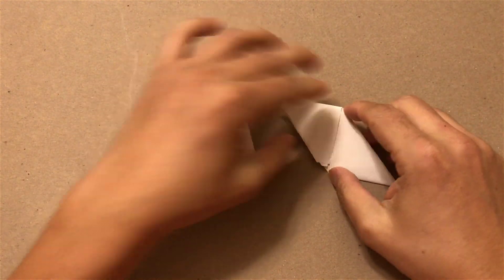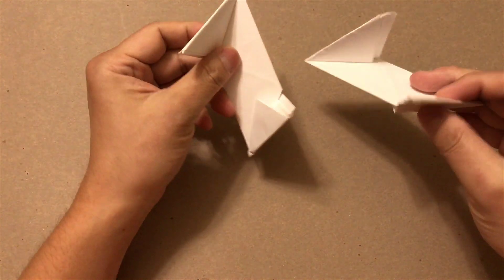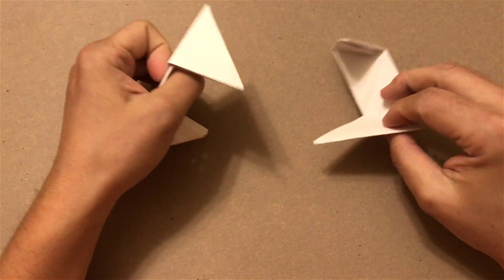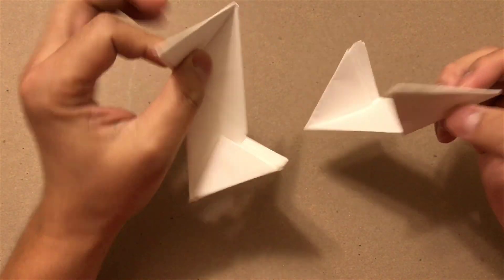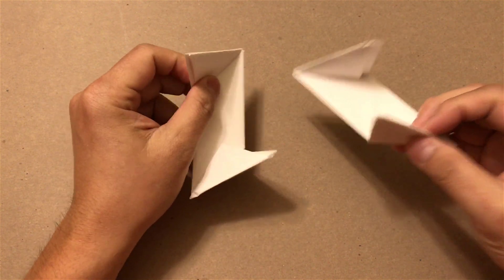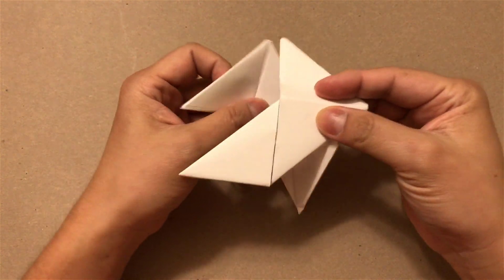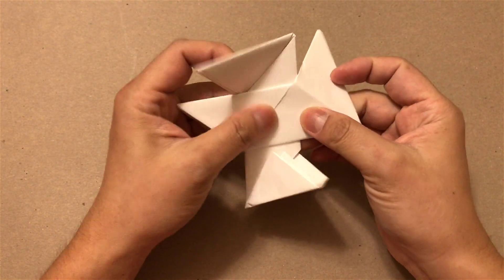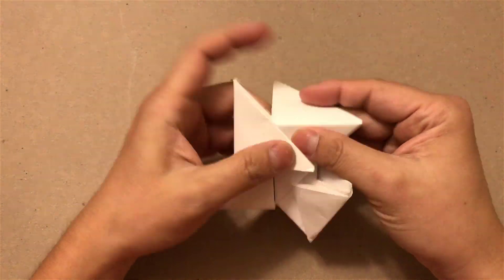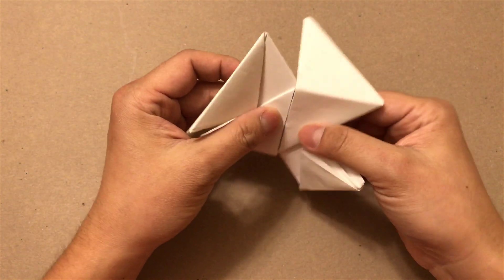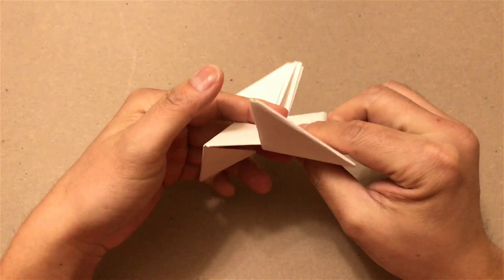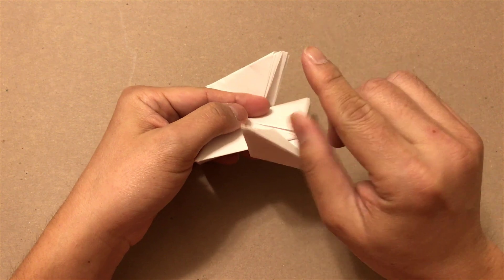So with your two pieces done, you will take the pointed side, and then flip one over so they can hug each other. So you have one side pointed this way, and the other side pointed the back.